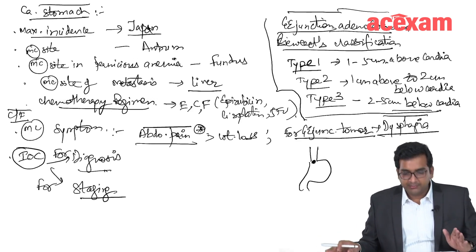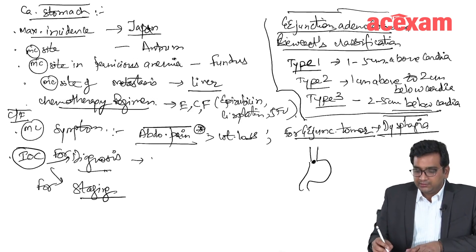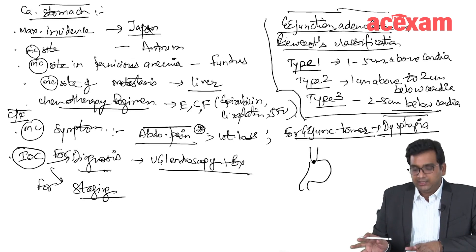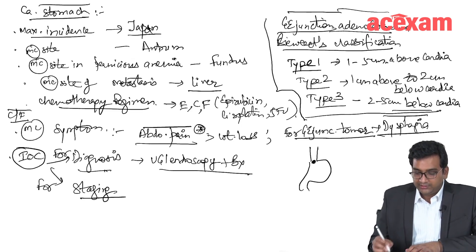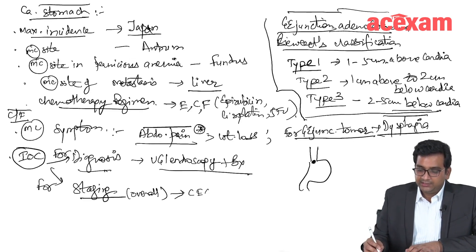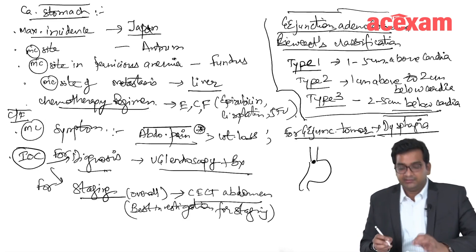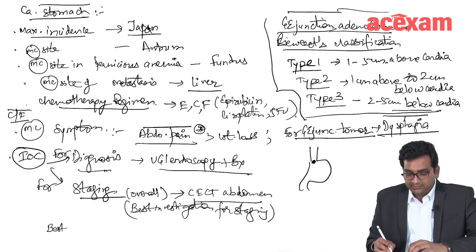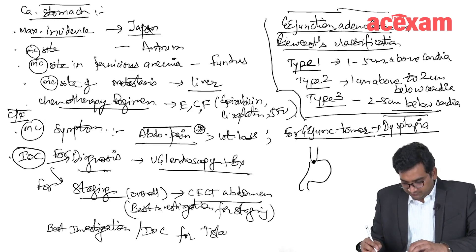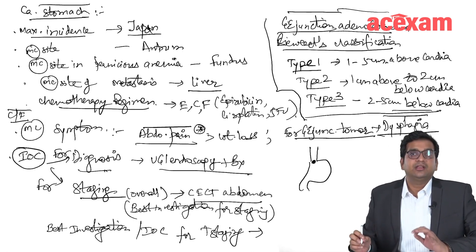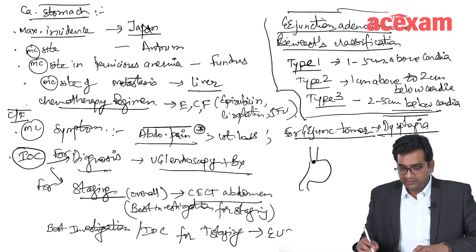Investigation of choice for diagnosis is upper GI endoscopy and biopsy. Investigation of choice for overall staging is CECT abdomen. If the question specifically mentions T staging, the investigation of choice for T staging is endoscopic ultrasound.